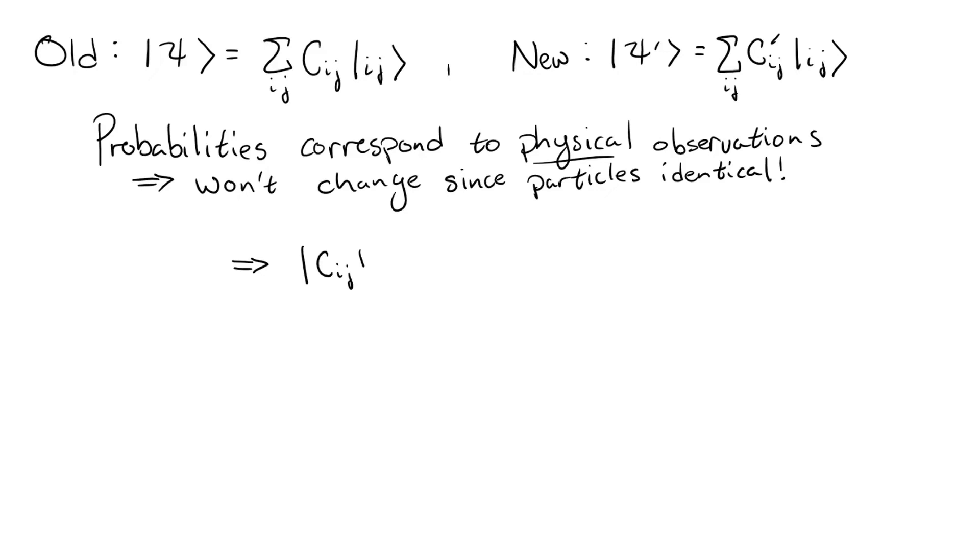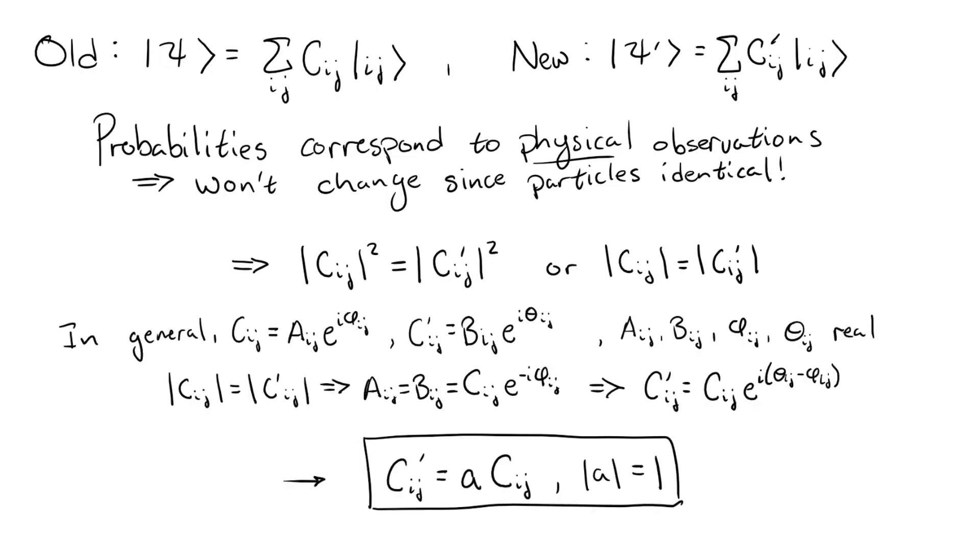This means that the probabilities to measure each state should be the same. In other words, the magnitude of c i j squared should be equal to the magnitude of c prime i j squared, or just magnitude c i j equals magnitude c i j prime, since magnitudes are always positive. Another way to write this is c i j is equal to a times c prime i j, where a is just some constant with magnitude 1.